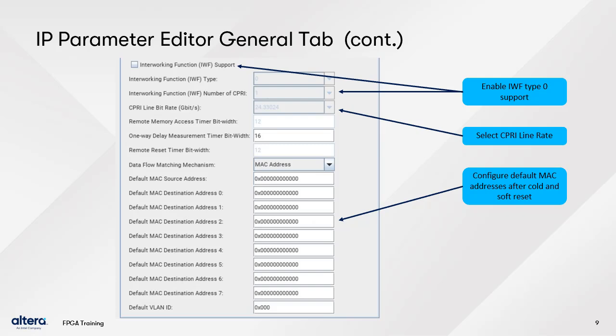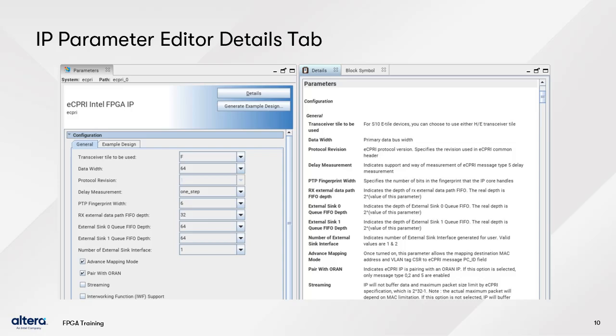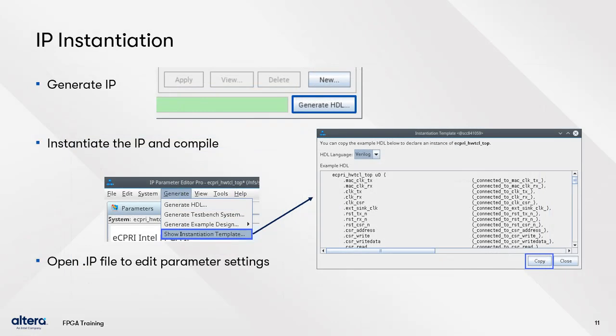These pre-program the MAC address CSRs, so you can change them dynamically later if you wish. If you have questions on any fields in the Parameter Editor, the Details tab to the right is a great quick reminder. Of course, this information and more are also in the User Guide. Once you have completed setting the parameters for your instance, generate the IP, instantiate it in your design, and compile.